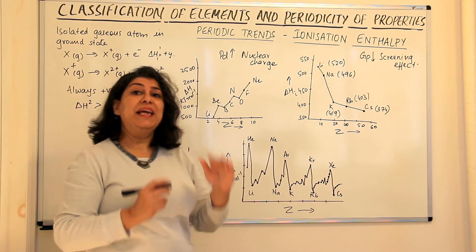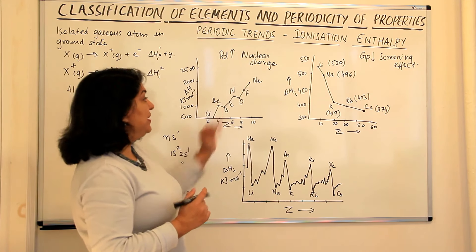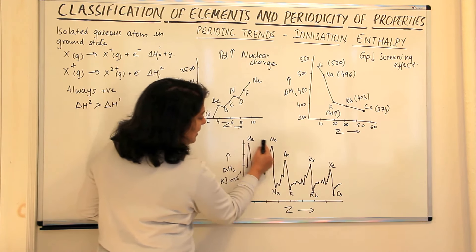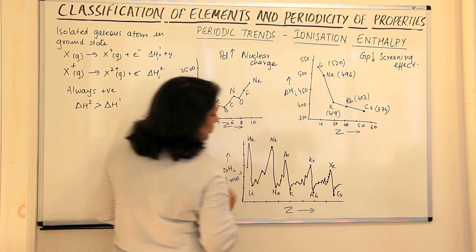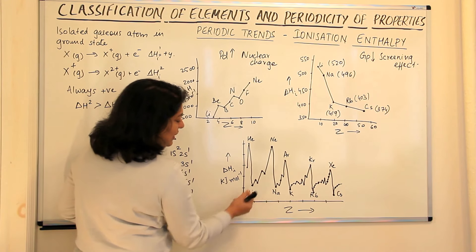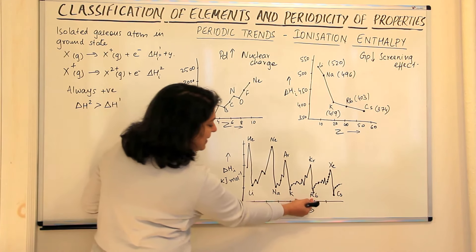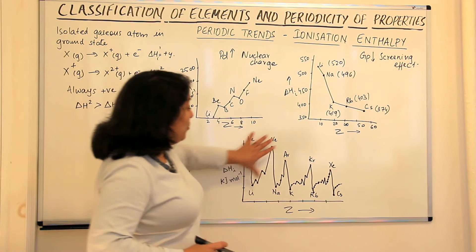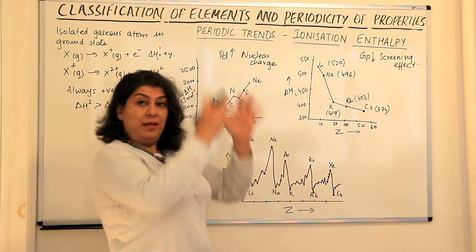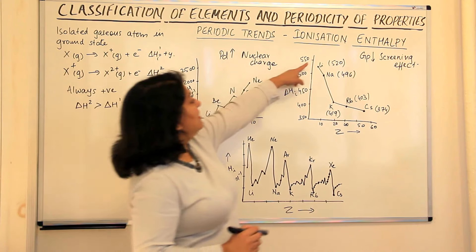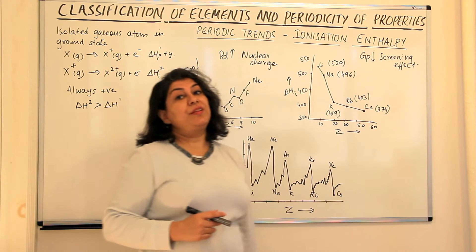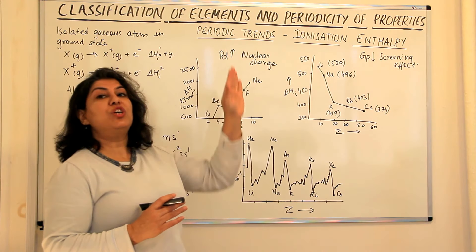So ionization enthalpy is seen to be increasing across a period. If you look at a group — comparing only the noble gases or only the alkali metals — lithium is higher, sodium lower, potassium even less, rubidium less, cesium is less. So comparing elements in a group — first group: lithium, sodium, potassium, rubidium, cesium — the ionization enthalpy decreases as we go down a group.